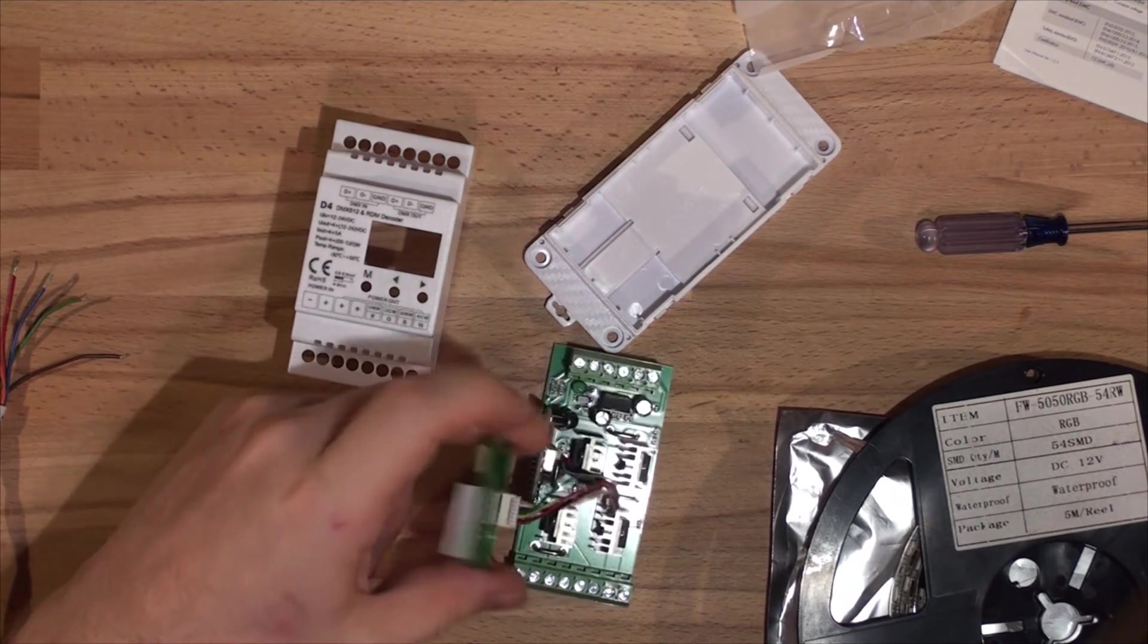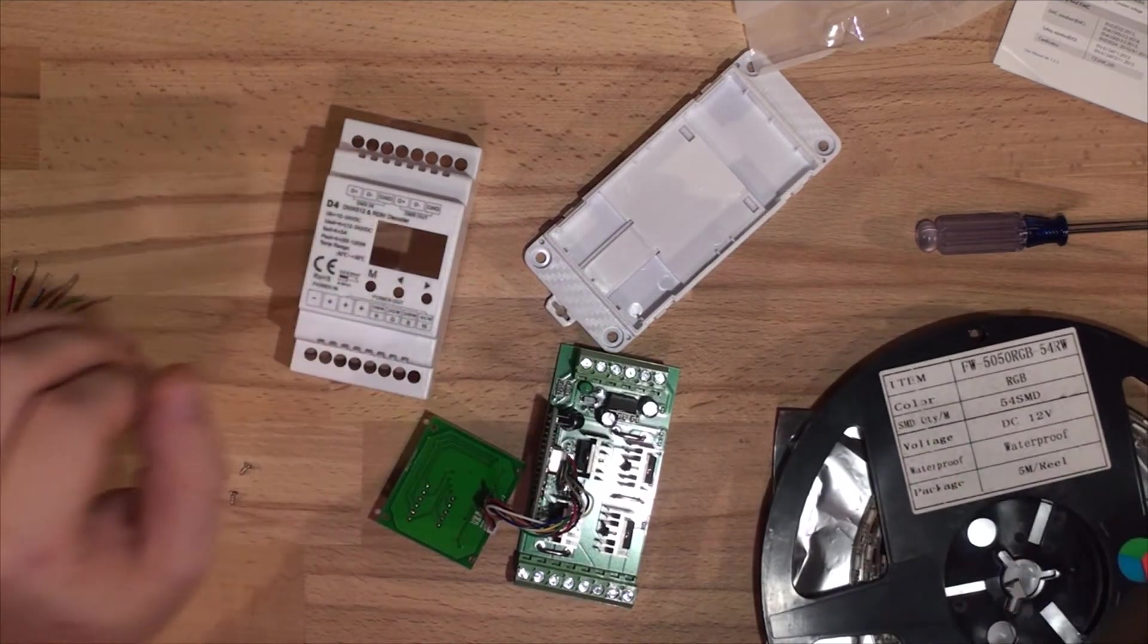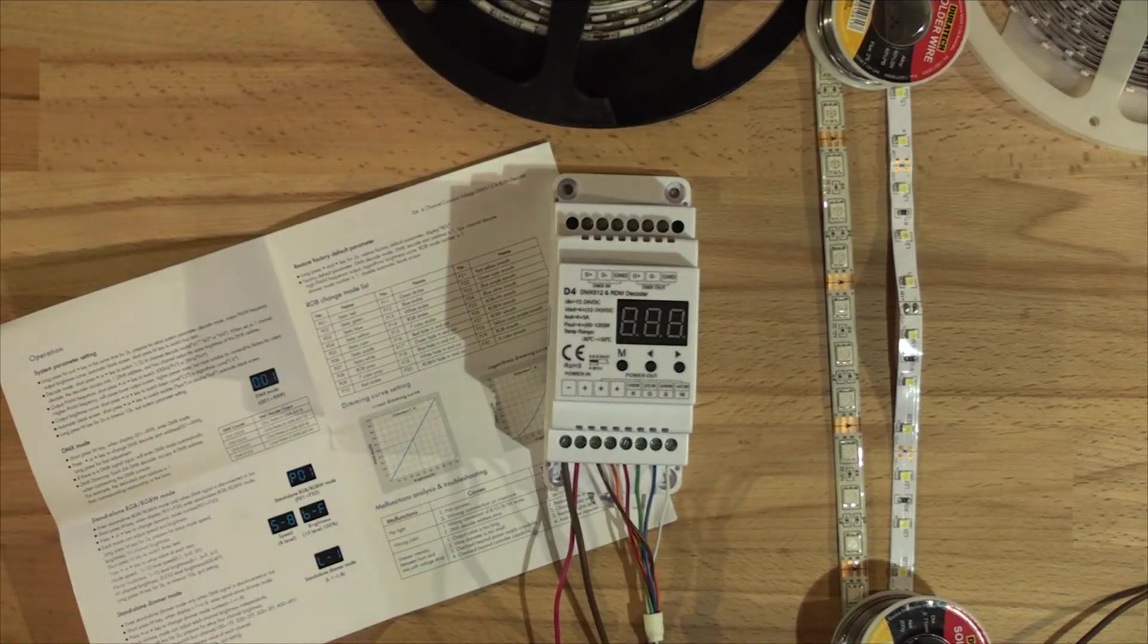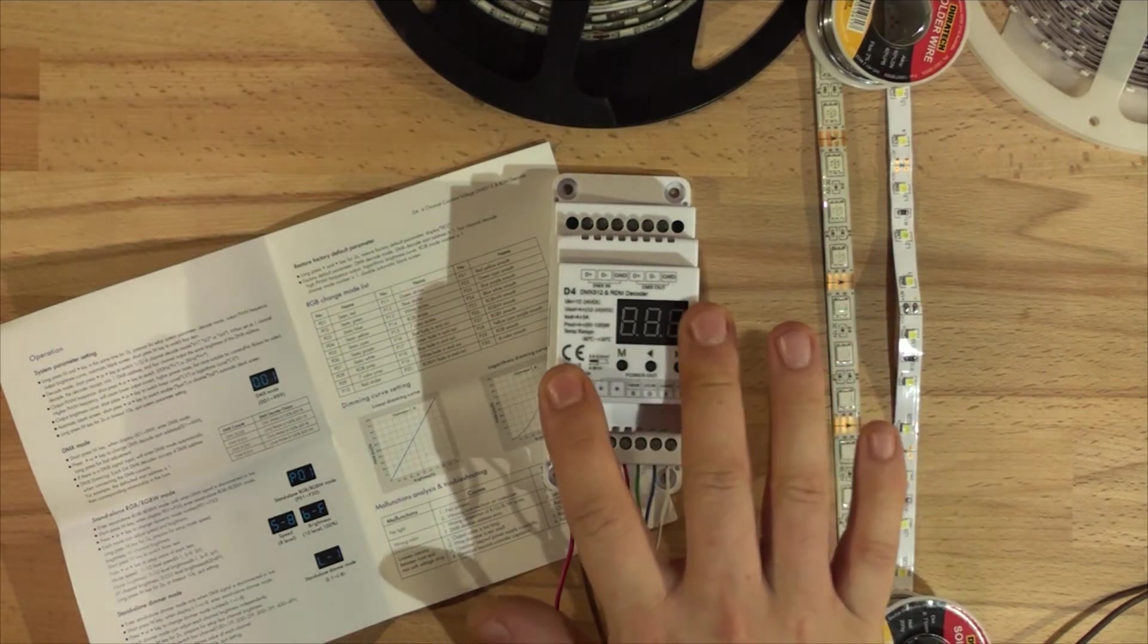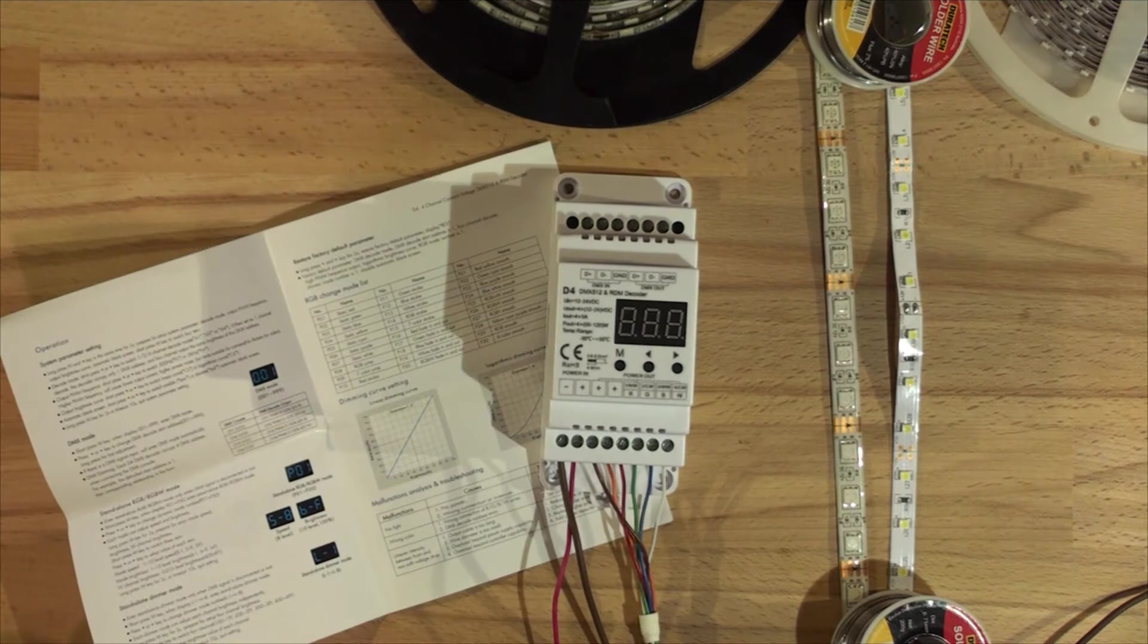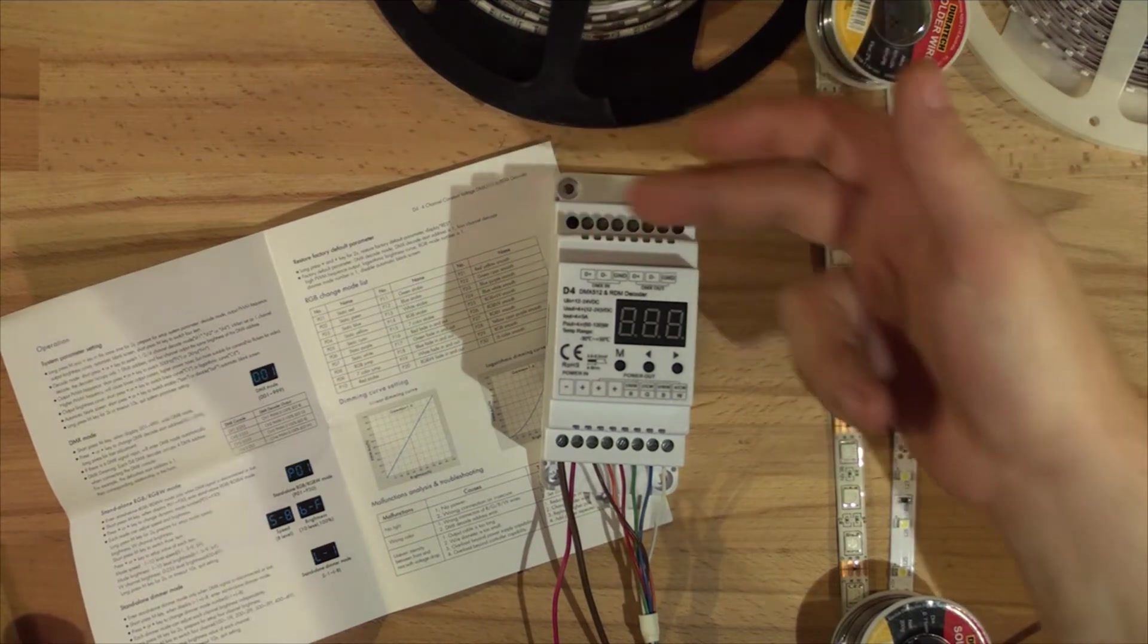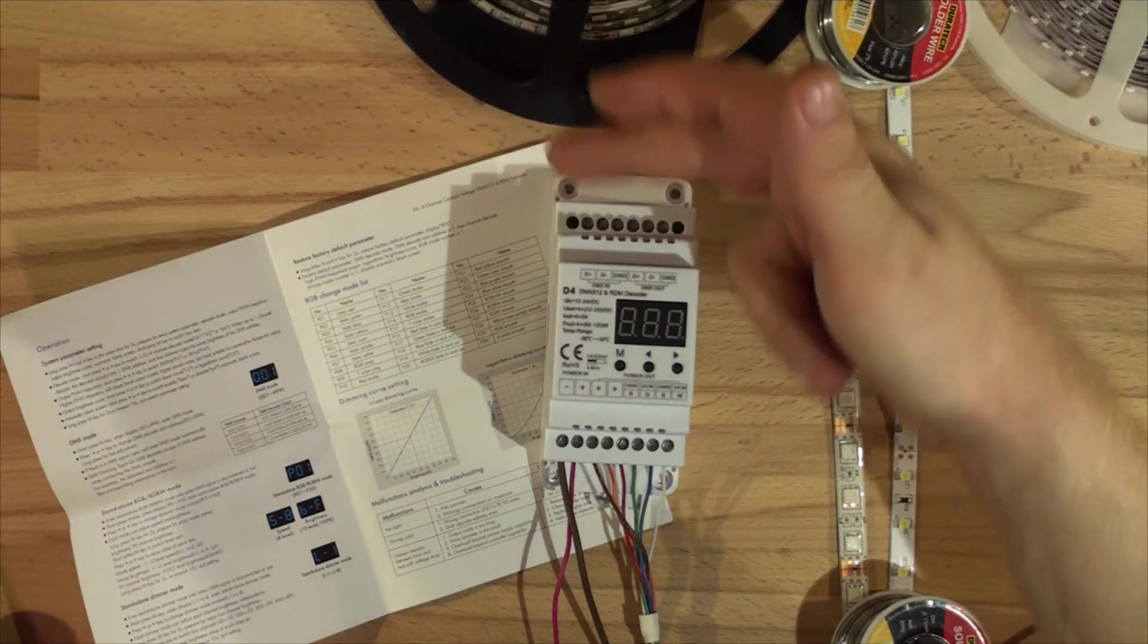So that's it for what's inside of it. I'm just going to put it together and hook up some LED strips. As you notice, the lights are a bit dim at the desk. I've just hooked everything up and I'm about to power up this DMX/RDM decoder.